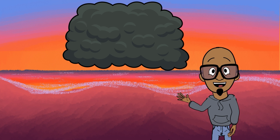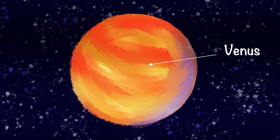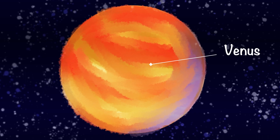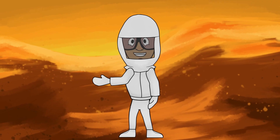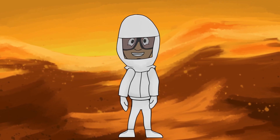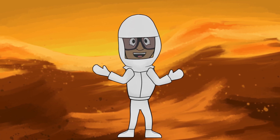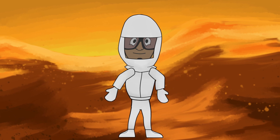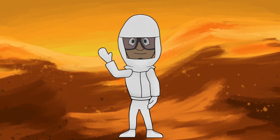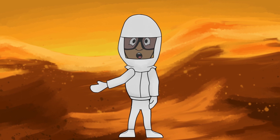Clouds aren't just here on Earth, though. Did you know that other planets also have clouds? The planet Venus is covered in clouds made entirely of sulfuric acid, so I have to wear this special suit for protection. Sulfuric acid is a dangerous chemical that can cause severe burns to humans and can even burn through metal. Woo-wee, it's getting hot in here! It's time to get back home, baby!